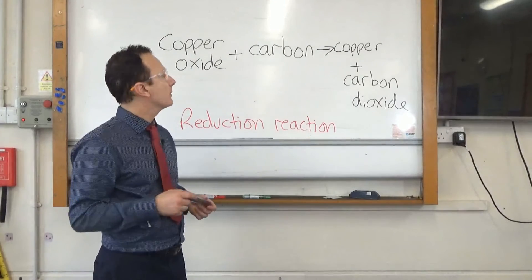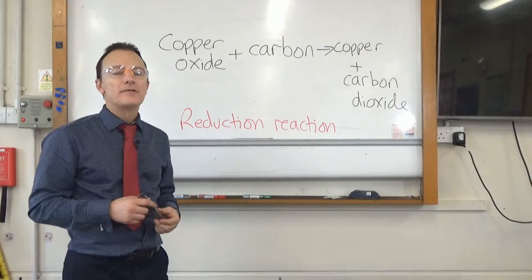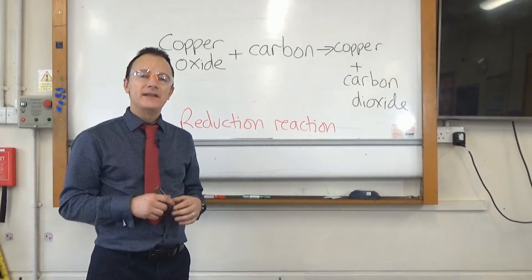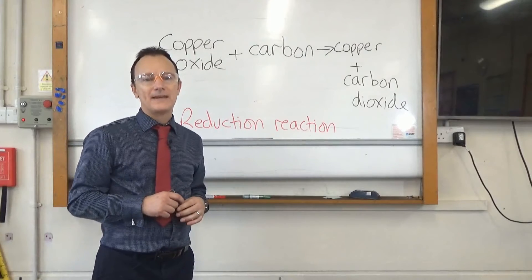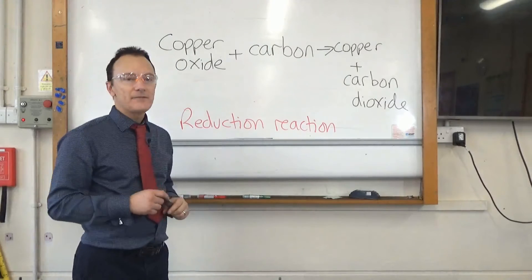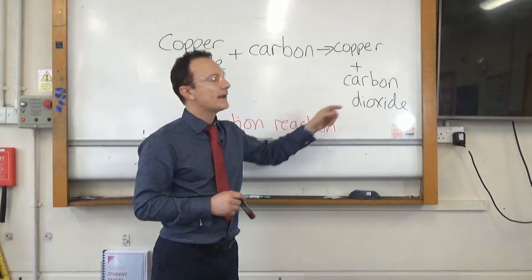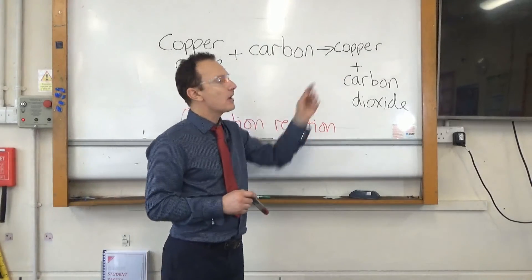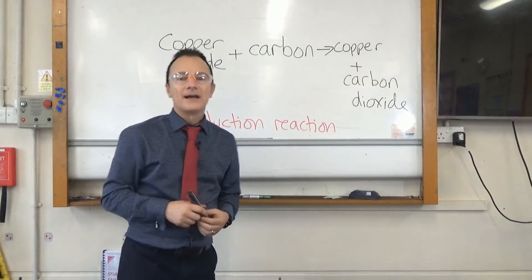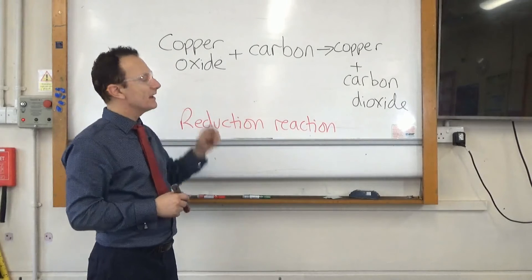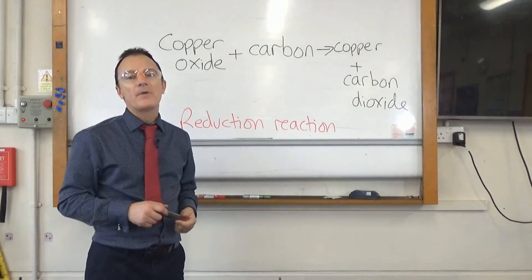The reason this reaction worked is that carbon is more reactive than copper. It's higher up in the reactivity series and if you need a reminder of how to remember the reactivity series I'll put a link up to a video of mine now. So because carbon is higher in the reactivity series it was able to take the oxygen from copper to form carbon dioxide and that meant copper was left on its own and we're able to extract the copper. Now this type of reaction where something is losing oxygen is called a reduction reaction. That's something you need to remember for your exam.